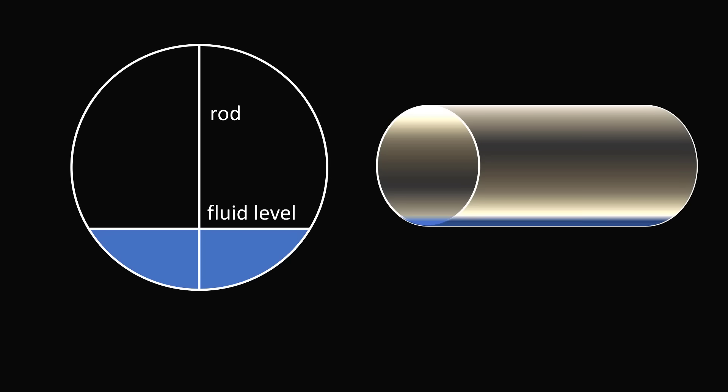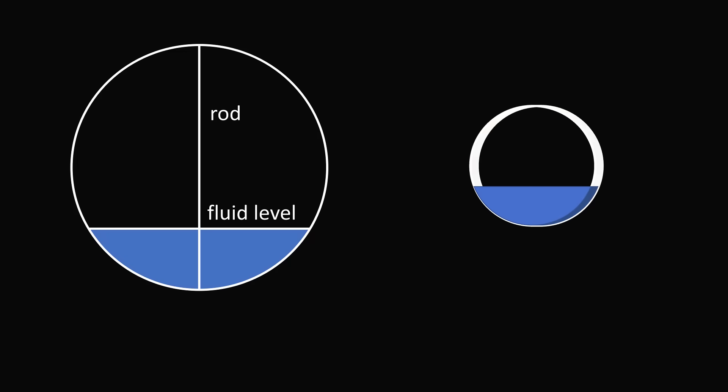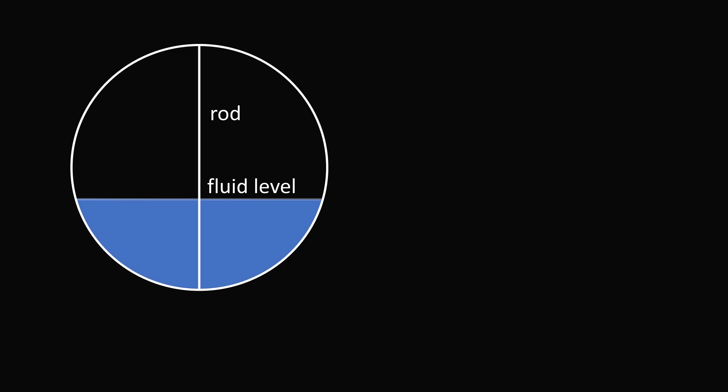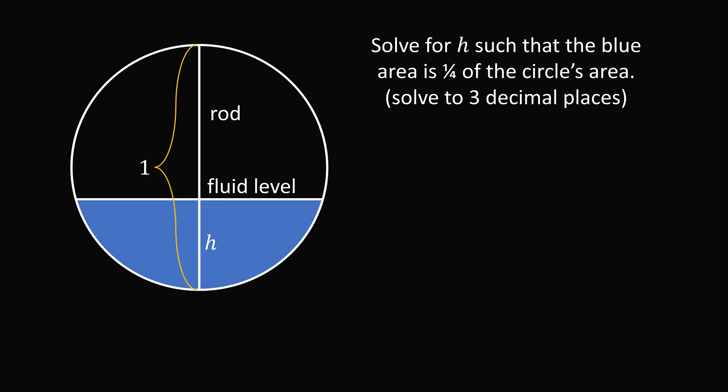So just to explain this a little bit more carefully, we have a cylindrical tank, and we're going to fill it up to some level with a fluid. Now the volume of this will be proportional to just the area of the cross section. So all we need to do is look at the cross section, which will be a circle with a circular segment. So now let's phrase the question. Suppose we want to fill the fluid level up to some level that will be 25% of the area of the circle. Suppose that the rod has a unit length that's equal to 1, and let's say the height of the fluid is equal to h. So what percentage of the rod will be necessary so that we get a quarter of the tank full? In other words, solve for h such that the blue area is 1 fourth of the circle's area.